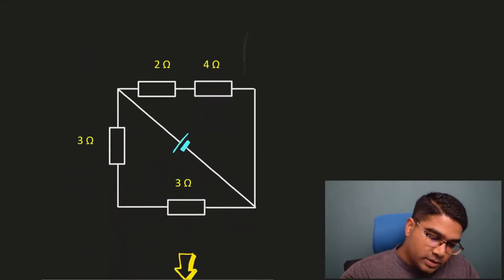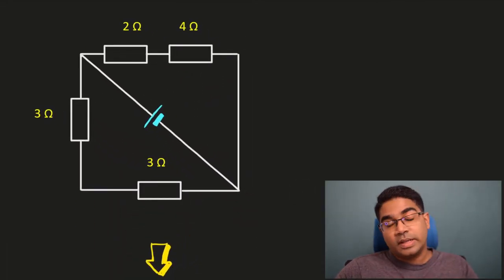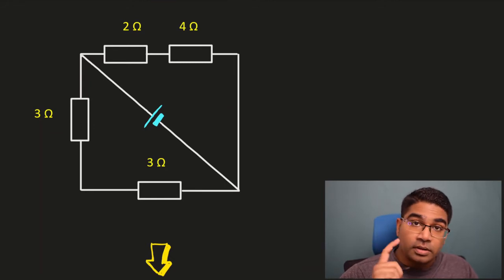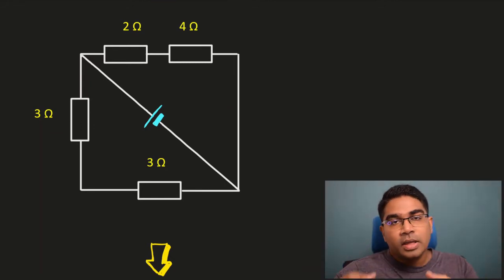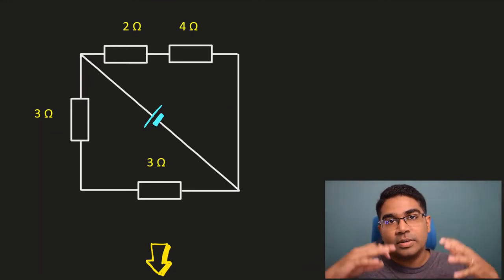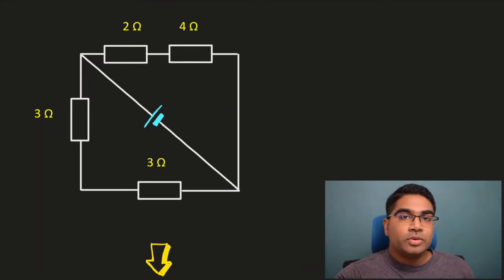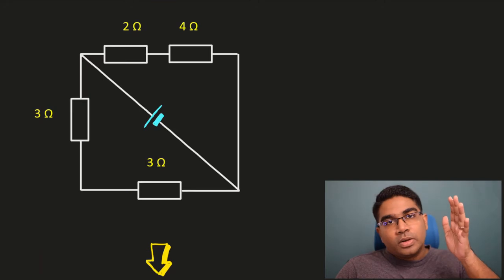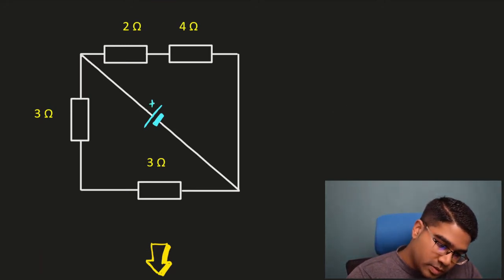Let's look at an even more complicated diagram. This is not so clear the way it's arranged. The first step is always to follow the current. If you want to know whether something is connected in series or in parallel, all you have to do is follow the current. The current flows from the positive terminal to the negative terminal of the battery or dry cell.